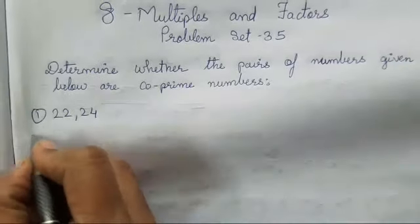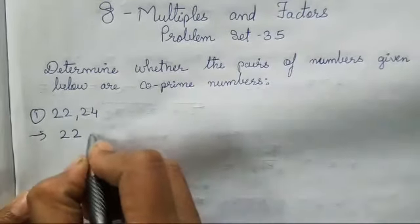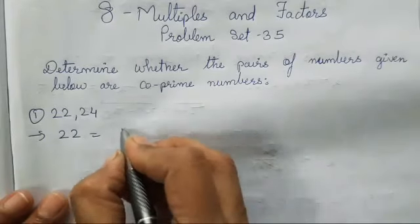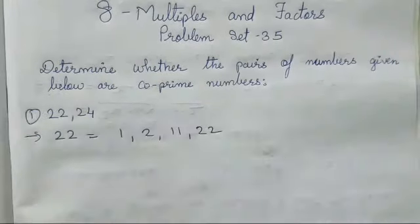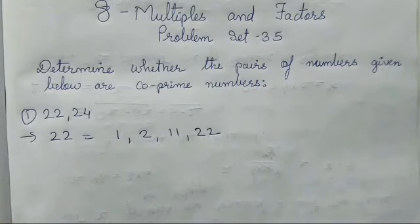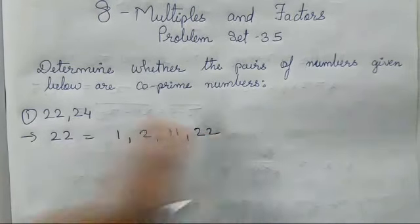So let's find the factors of 22. The factors of 22 are 1, 2, 11 and 22. So what are these? These are the factors of 22, meaning 22 is all in the table.